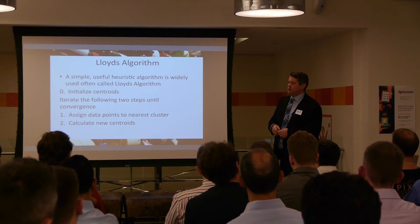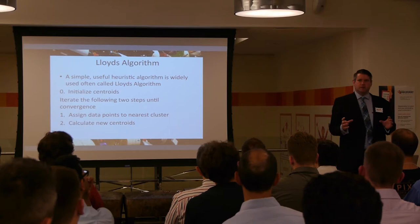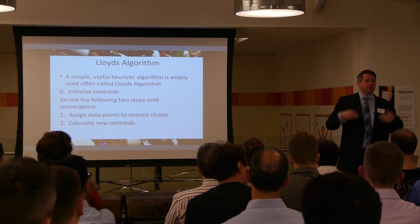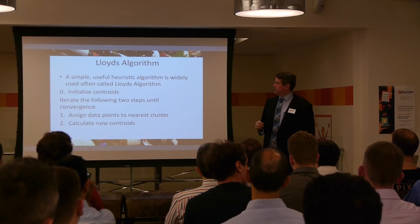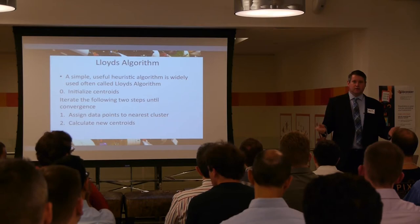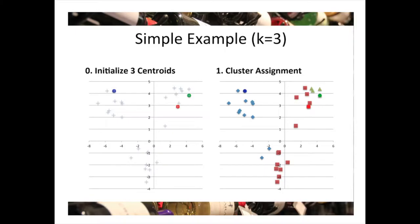Step zero is to initialize your centroids — there are many different ways to do this. One way is to just pick points at random: if k equals three, pick three of your input points and start from there. Then you iterate two steps until convergence: assign data points to the closest centroid, then calculate new centroids. That's it — it's very simple. A visual representation gives you the intuition a bit better.